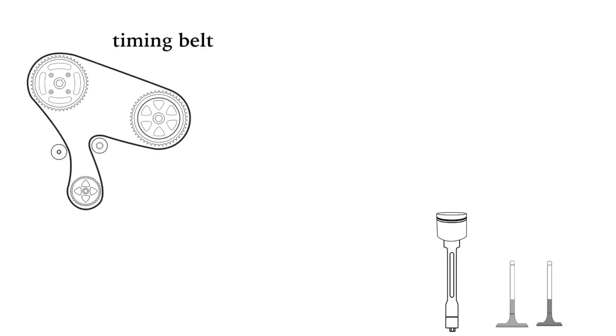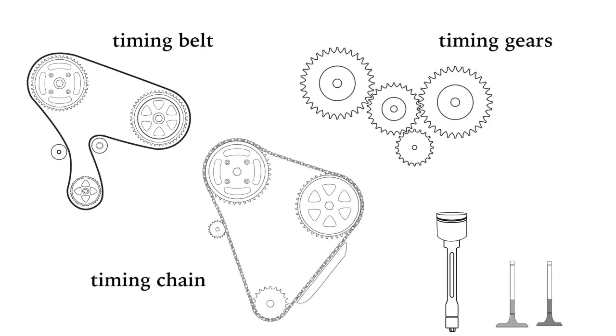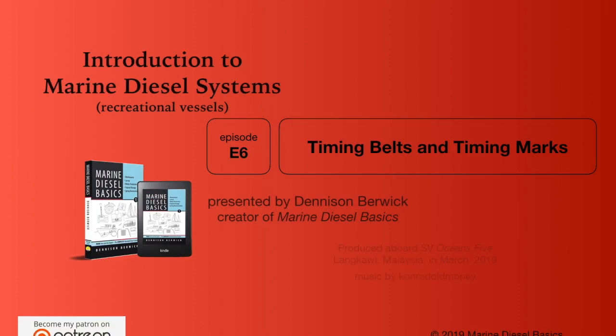Timing belts, timing gears, and timing chains are ways to synchronize the rotation of the crankshaft and the piston to the camshaft and the opening and closing of valves. Well, thanks for watching. Until next time, I wish you fair winds and a reliable diesel.